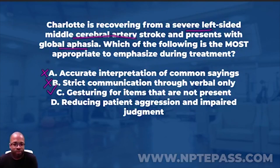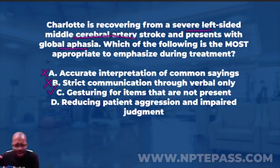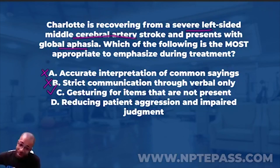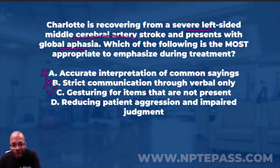Answer D says reducing patient aggression and impaired judgment. I don't like this answer because nowhere in the question does it mention that the patient is aggressive or has impaired judgment. Furthermore, impaired judgment and aggression are typically associated with right-hemisphere strokes — not left — because judgment centers are located on the right side. Our patient has a left-sided stroke, so answer D doesn't fit.